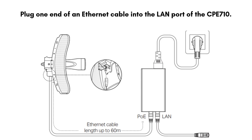Plug one end of an Ethernet cable into the LAN port of the CPE-710. Connect the other end of the cable to the PoE port on the PoE adapter. Plug another Ethernet cable into the LAN port on the PoE adapter and connect the other end to your computer or a network switch. Plug the PoE adapter into a power outlet.